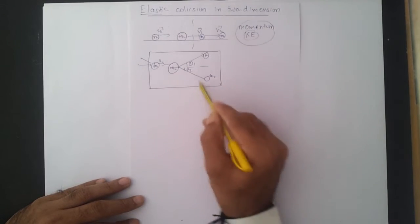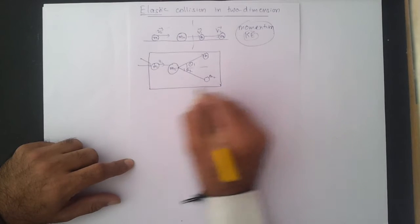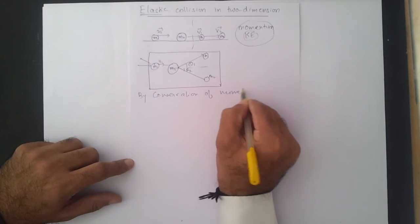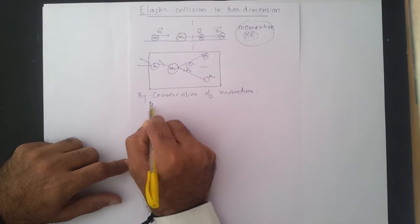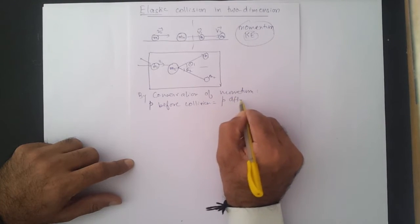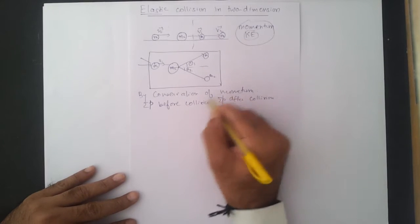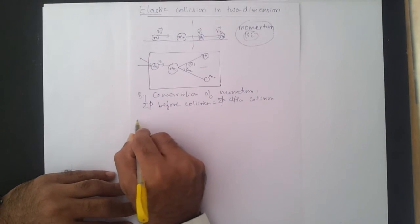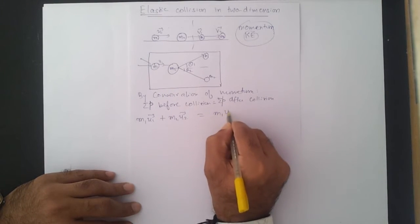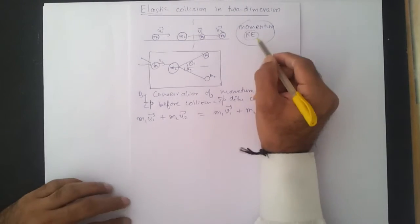Elastic collision means momentum and kinetic energy are conserved. Let us look at the mathematics. By conservation of momentum, the total momentum before collision equals total momentum after collision: M1·U1 + M2·U2 = M1·V1 + M2·V2, where V1 and V2 are final velocities. To handle directions, I need to find the various components of velocity, since mass is a scalar and velocity is a vector.